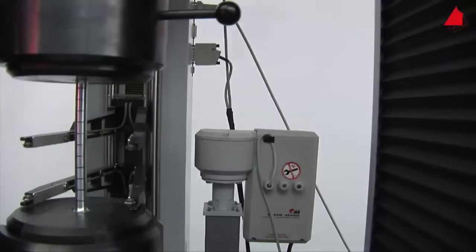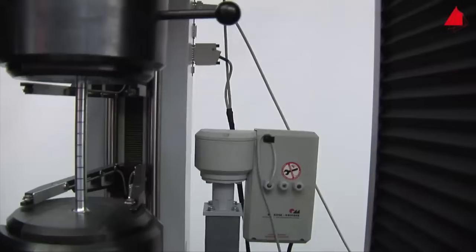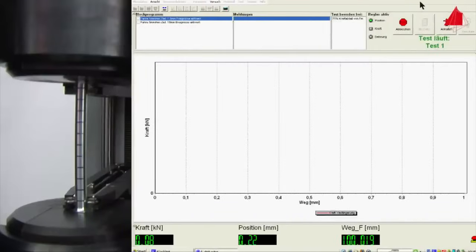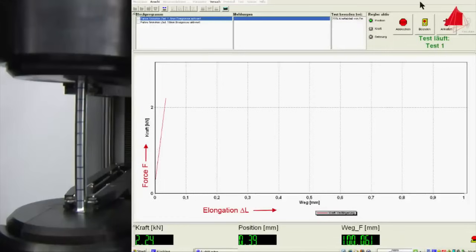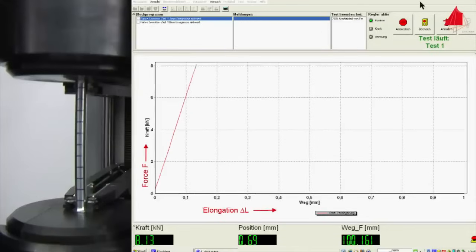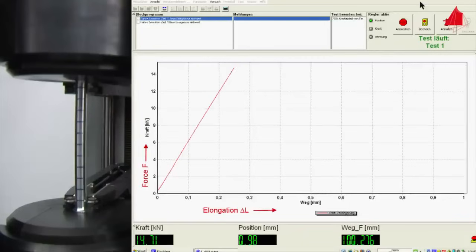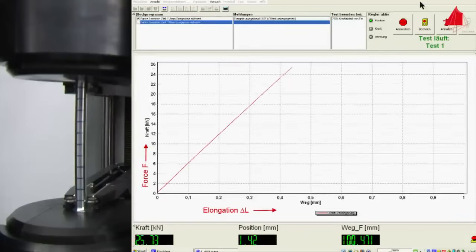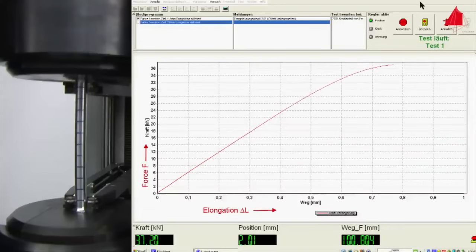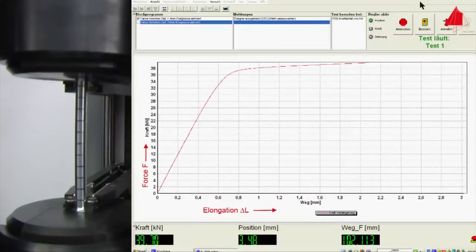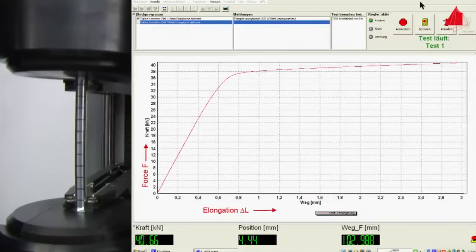The initial linear curve in the force-elongation diagram again shows the elastic behavior of the material. But this time, the end of the elastic area is not revealed by a sudden drop of force or any distinct change. There is a smooth and gradual transition from linear elastic behavior to plastic deformation.